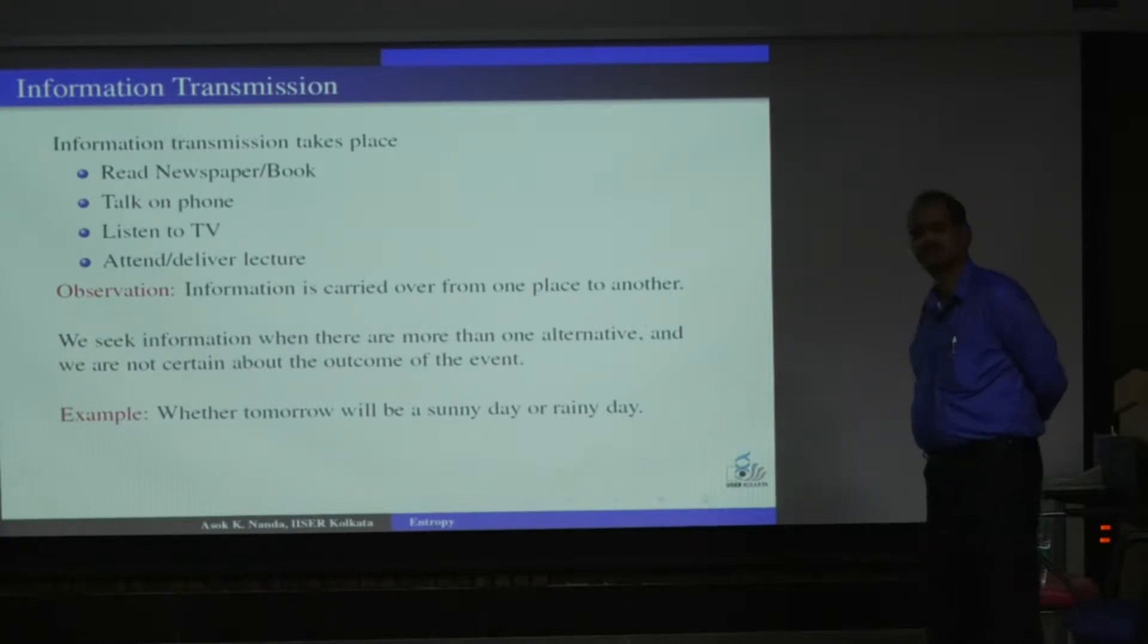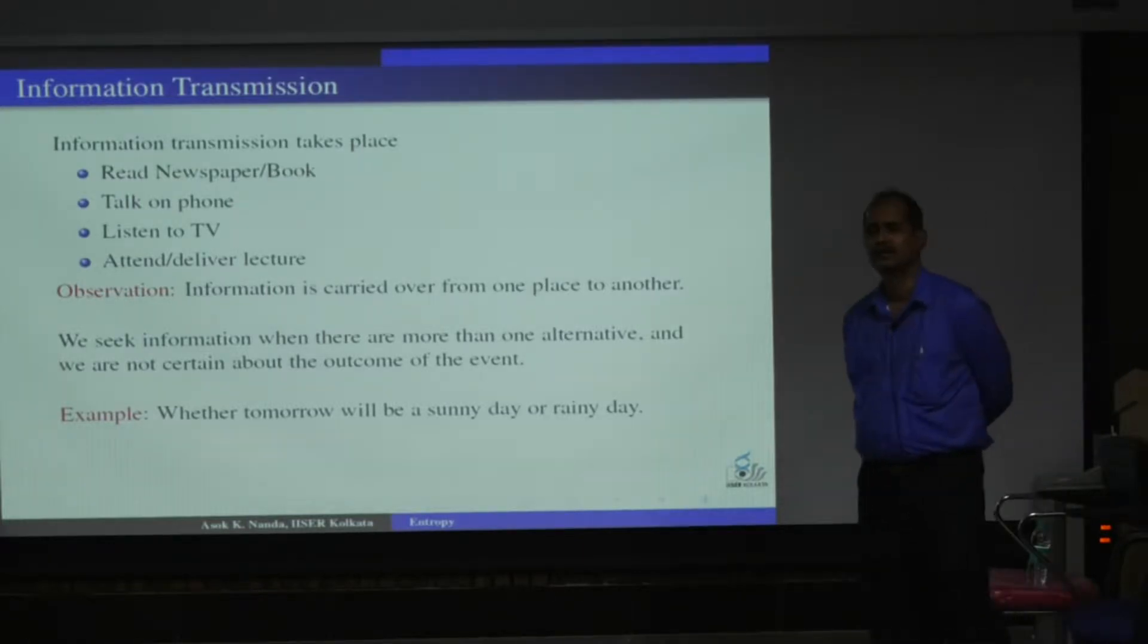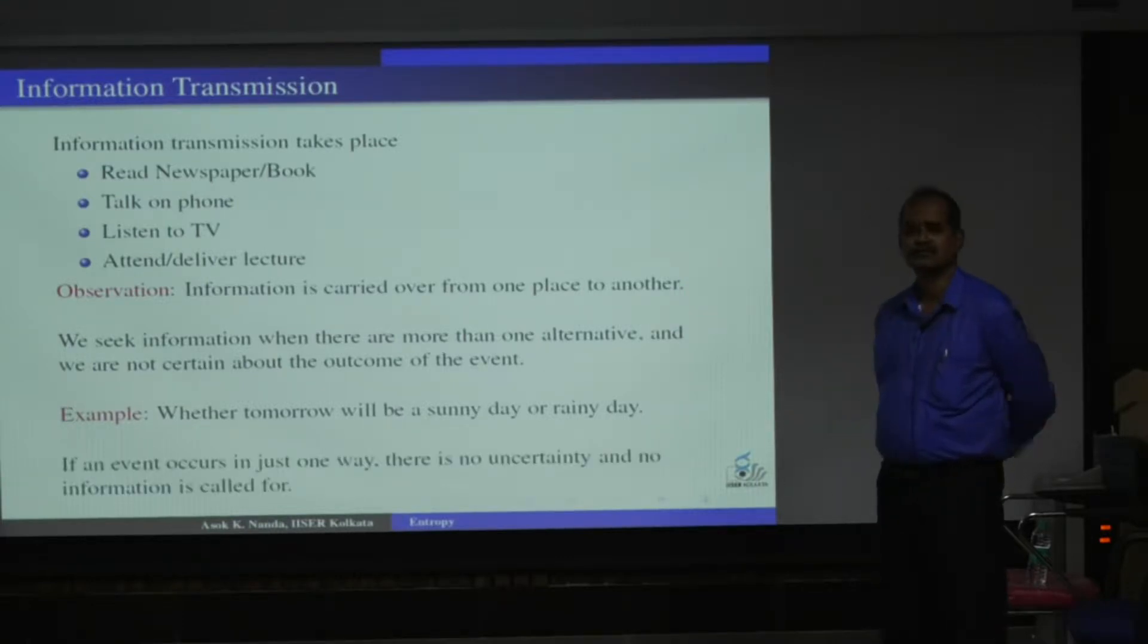Based on today's weather, can we say anything about tomorrow's weather? We don't know whether it is a rainy day or sunny day. So there is some kind of uncertainty, and that's why there are two possible ways. There is some kind of uncertainty.